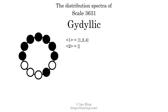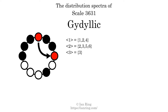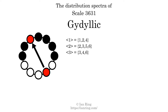The generic interval of 2 scale steps comes in 4 different specific interval sizes: 2, 3, 5, and 6 semitones. The spectrum width of this generic interval is 4. The generic interval of 3 scale steps comes in 4 different specific interval sizes: 3, 4, 6, and 7 semitones. The spectrum width of this generic interval is 4.